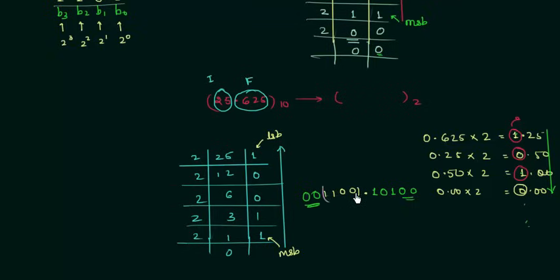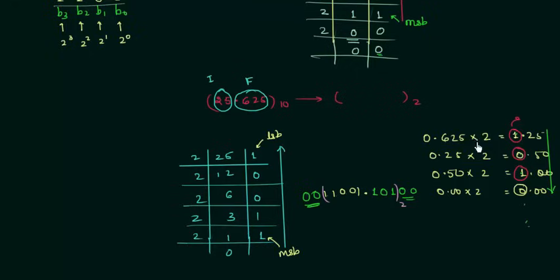The full binary equivalent of 25.625 is 11001.101. There are two important rules: for the integer part you read the remainders from bottom to top, and for the fractional part you read the integer parts extracted from each multiplication from top to bottom. For the integer part you divide by 2; for the fractional part you multiply by 2.